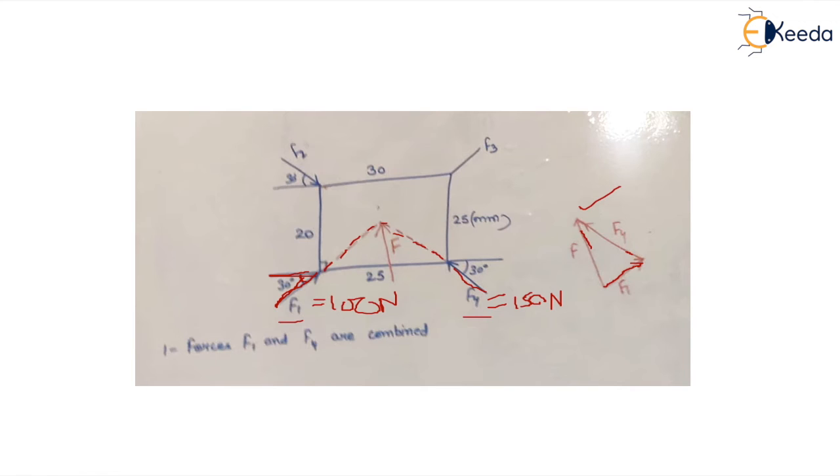Now, whatever is the resultant, it will pass through the line of action of these two forces. So we extend the line of action of f1 and f4, and the point at which the line of action of these two forces meet is the point at which the resultant force will be applied.